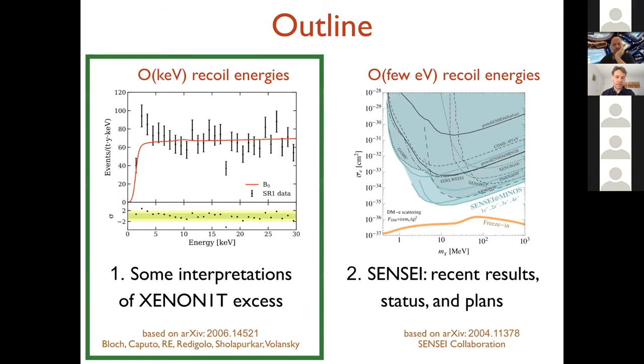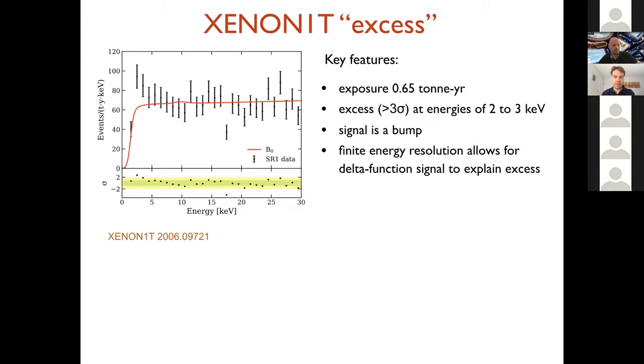So let's start with the Xenon 1-Ton explanation and I'll give you some model ideas for what models can work. Just to set the stage for the Xenon 1-Ton excess, here's the plot from their paper. The key features are, this is actually quite a large exposure, it's 0.65 ton-year. There's an interesting excess which is more than three sigma, and the energy is mainly located in the two and three kV energy bins.